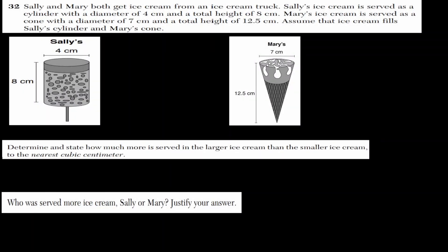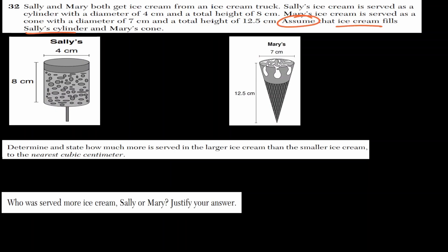In question 32, Sally's ice cream is served in a cylinder with a diameter of 4 centimeters and a height of 8 centimeters. Mary's ice cream is served in a cone with a diameter of 7 centimeters and a height of 12.5 centimeters. We want to determine how much more is served in the larger ice cream to the nearest cubic centimeter.